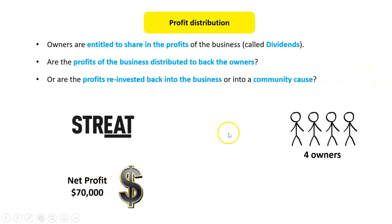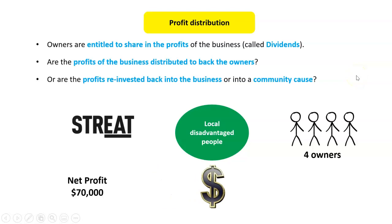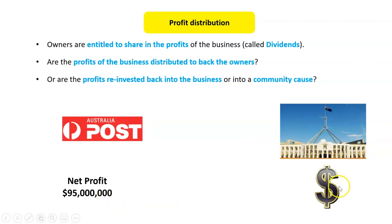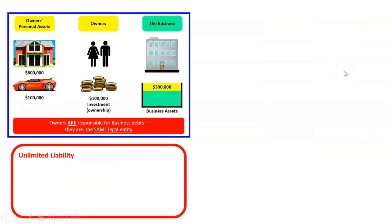Street Cafes is a social enterprise — if it makes a net profit of $70,000 with four owners, they may take some profit but give most of it to their community cause, which in this case supports disadvantaged and homeless youth. For Australia Post, if it makes a net profit of $95 million, that goes back to the government and some is reinvested into Australia Post itself.